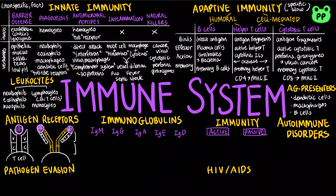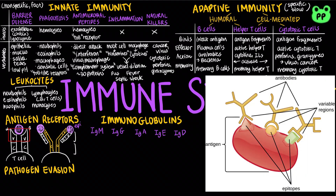A T cell receptor consists of one alpha chain and one beta chain linked by a disulfide bridge. The tips of the chains form a variable region that can recognize a specific epitope, also known as antigenic determinant, on an antigen. The rest is a constant region. B cell receptors and immunoglobulins consist of two identical heavy chains and two identical light chains linked by several disulfide bridges, with an antigen-binding fragment (Fab) on the tip and a crystallizable fragment (Fc) on the heavy chain only.